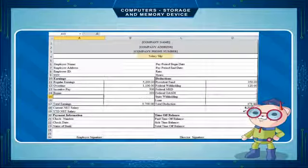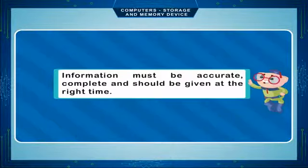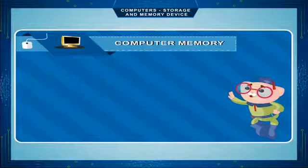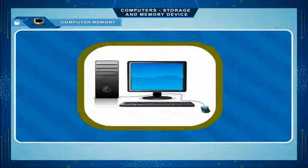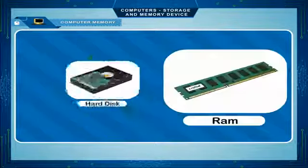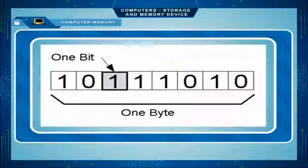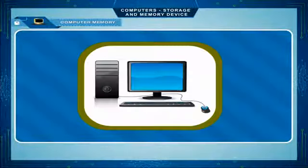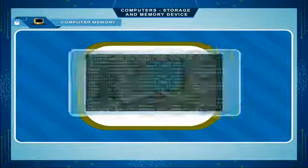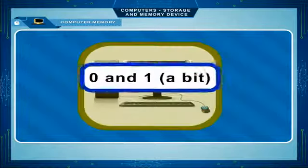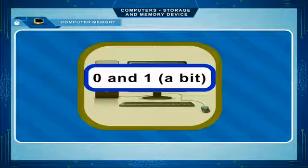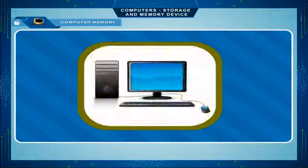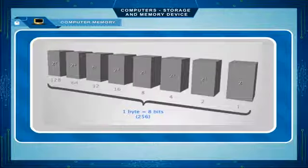Information must be accurate, complete, and should be given at the right time. Computer memory is measured in terms of bytes. One byte is capable of holding one character. Each piece of information is represented within the computer memory using binary digits 0 and 1, called a bit. A combination of 8 bits makes a byte.